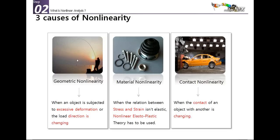The first type of nonlinearity is geometric nonlinearity. It occurs when an object is subjected to excessive deformation or when the load direction is changing. The second type is material nonlinearity — when the relation between stress and strain is not elastic, meaning you have an elastoplastic relation or another kind to describe the material. The third type is contact nonlinearity, which occurs when the contact between objects is changing, such as during a crash.